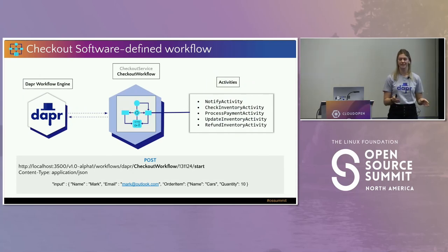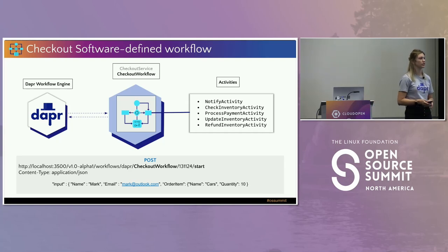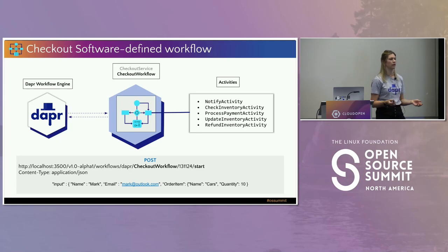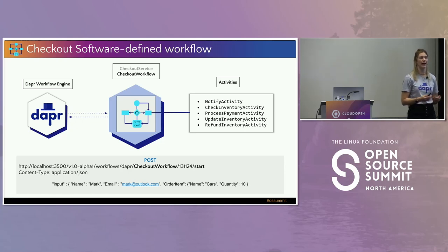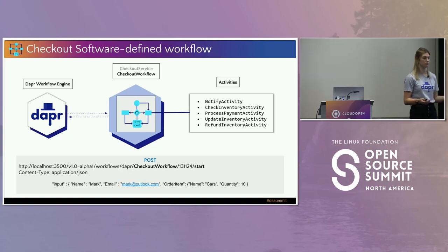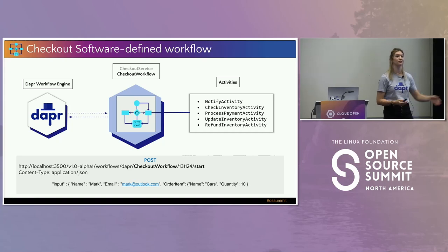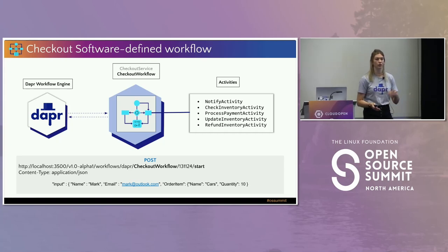Now we're going to put together all those concepts in a more advanced demo. We have our Dapr sidecar with that gRPC stream initiated. This time we're looking at it from a retail perspective. Think of this as a single microservice called the checkout microservice. Within that microservice, there's a workflow that handles receiving a checkout — a user has already curated what they want to order, and we're receiving that order payload and executing the checkout process. We no longer have one activity like the Hello World demo, but five, and they're deterministic — a particular input will always follow the same path.